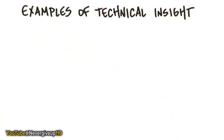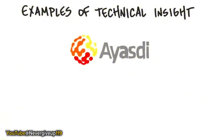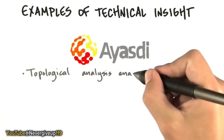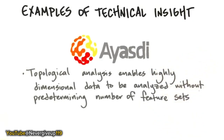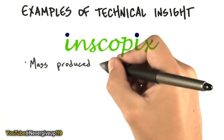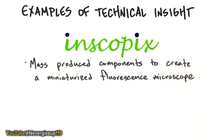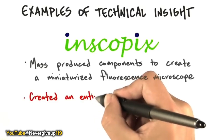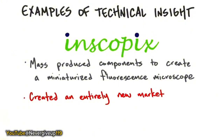Let's look at some examples of technical insights. There's a company called Ayasdi that was an outgrowth of the Stanford Math Department where a PhD student said they could do a topological analysis of highly dimensional data to be analyzed without predetermining the number of feature sets. It turns out this is the world's best way to go through huge data sets in a way that was just computationally not possible before. Once they had their technical insight, they started to talk to customers about pains and gains, and it was an enormously effective product. Another example was a startup called Inscopix that mass-produced components to create a miniaturized fluorescence microscope — their technical insight allowed them to reduce the size of a device that took up a tabletop to something that could fit in your hand, creating an entirely new market that solved problems customers didn't even imagine until they saw this new device.